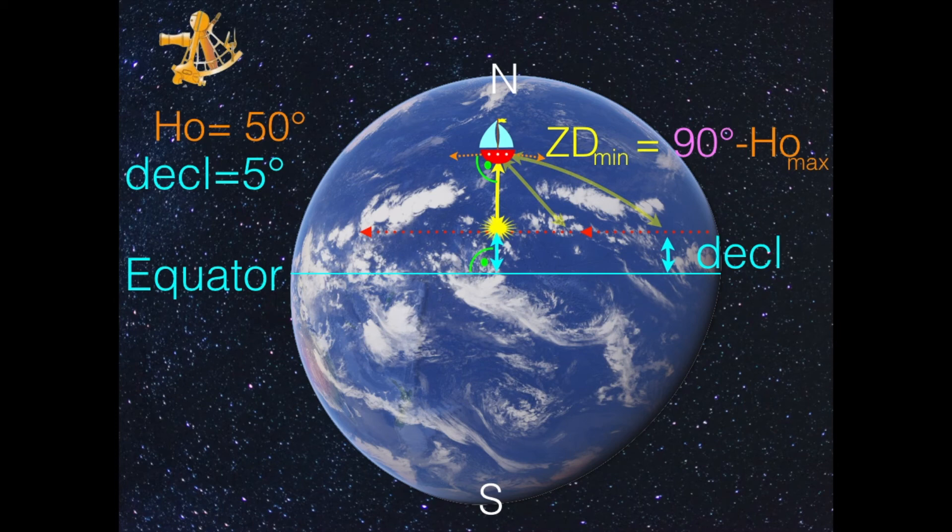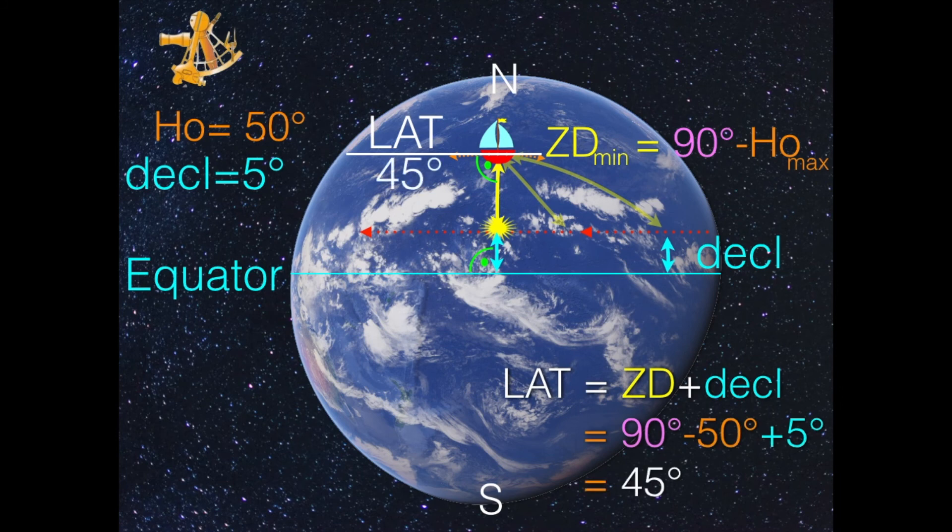And a parallel to the equator is also called a parallel, namely a latitude. So in my example here, I say that let's assume that I have observed an altitude of 50 degrees, and that we have looked up in the almanac that the declination is 5 degrees.